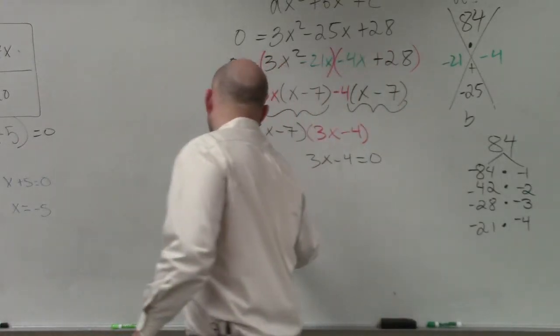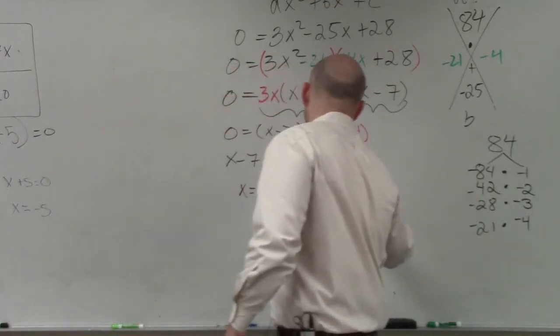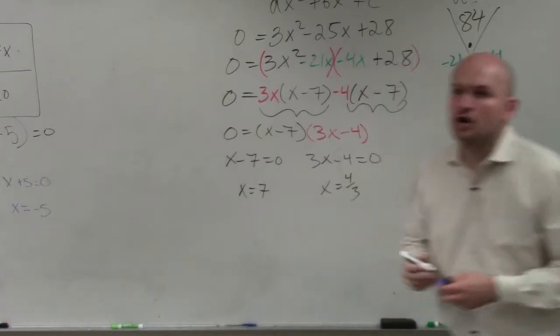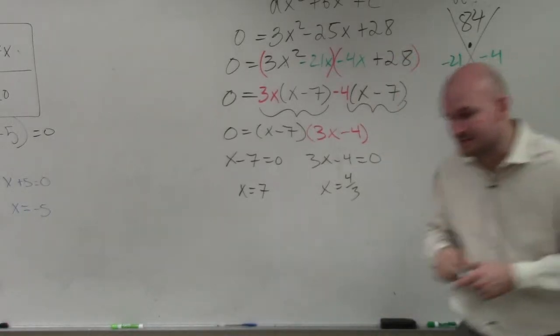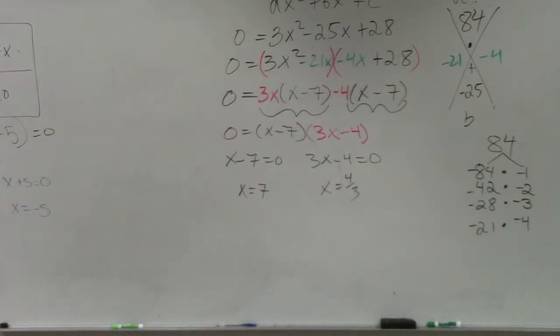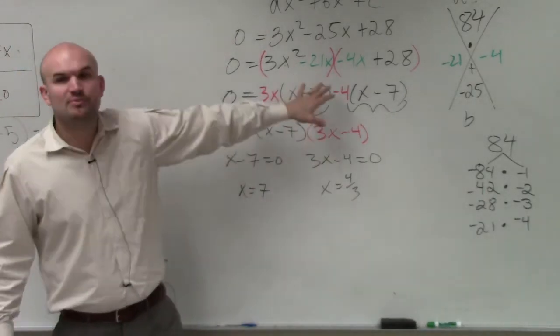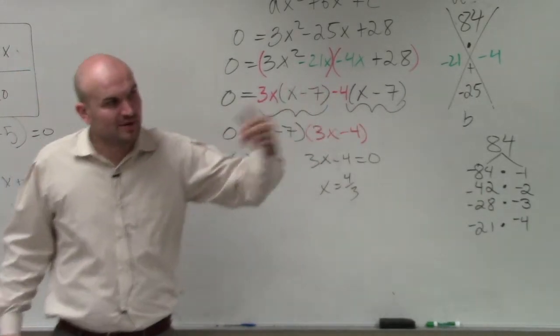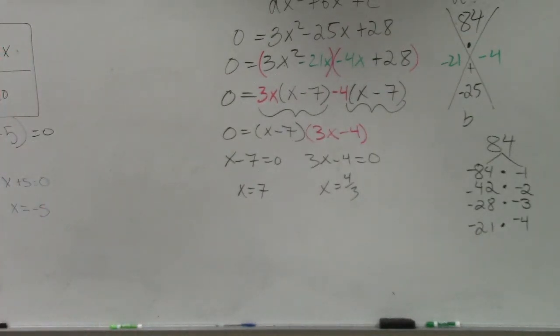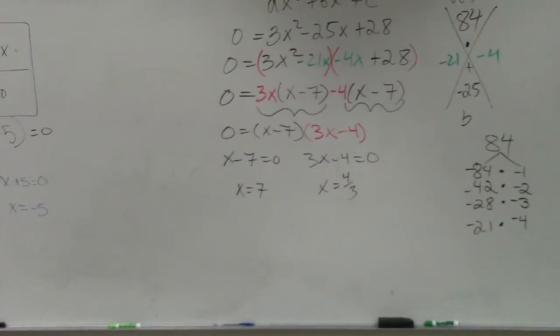Now you can solve. x equals 7, x equals 4 thirds. So ladies and gentlemen, when you're looking at this, when you guys go through this, you can use the box method. That's fine. Or if you prefer to use grouping, I just want to give you guys an extra technique.